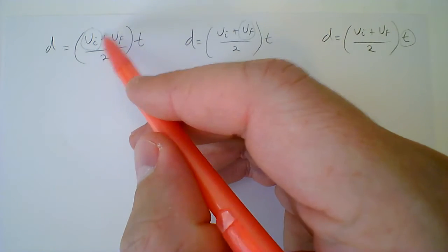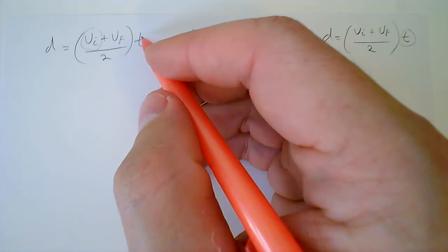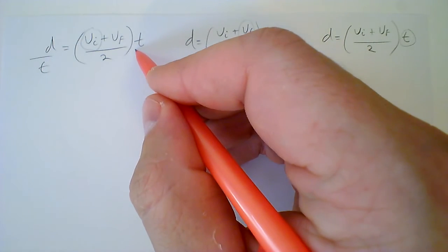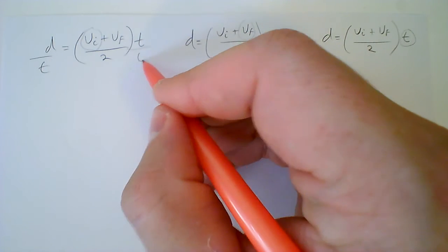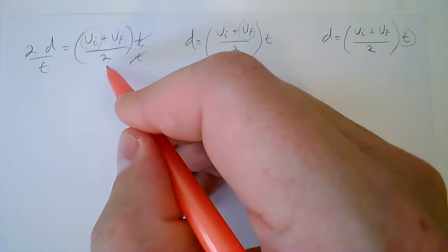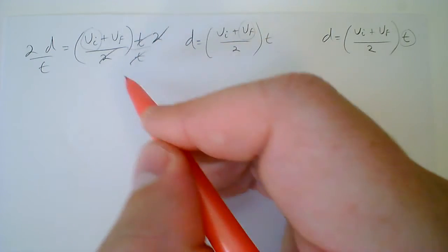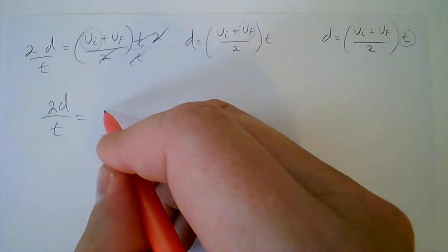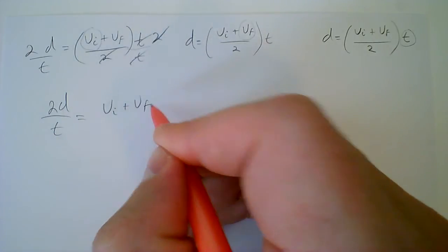When I want to isolate vi, first I'm going to divide both sides by t, and that gets rid of that. Multiply both sides by 2, that gets rid of that, and I have 2d over t equals vi plus vf.